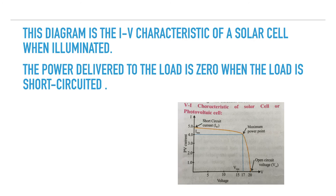The intersection of the I-V curve with the I-axis is the short-circuit current ISC, corresponding to a given light intensity. The intersection with the V-axis is the open-circuit voltage VOC, corresponding to a given light intensity. The power delivered to the load is zero when the load is open. However, there is a point on the curve where the power delivered is maximum, and that point is obtained as PL, which can be given as VOL × ISC.